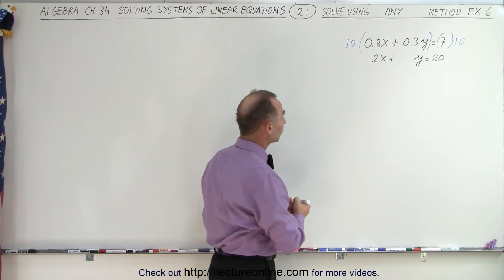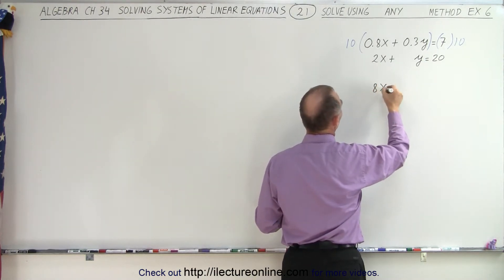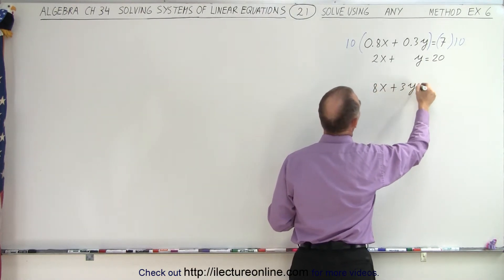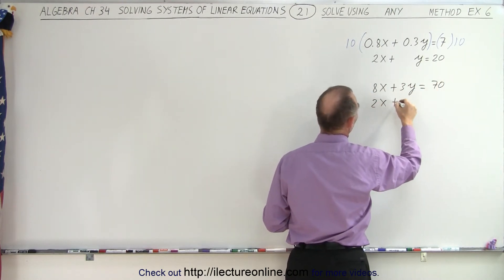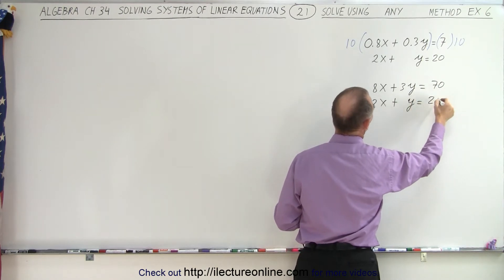So let's see what that turns out to be. We end up with 8x plus 3y is equal to 70. Then we repeat the bottom equation, 2x plus y equals 20.